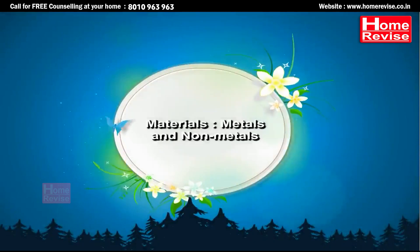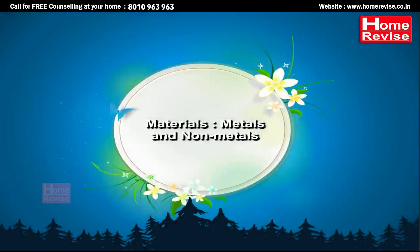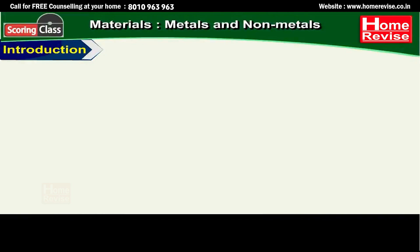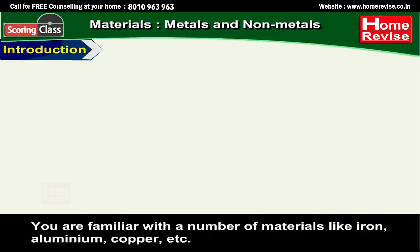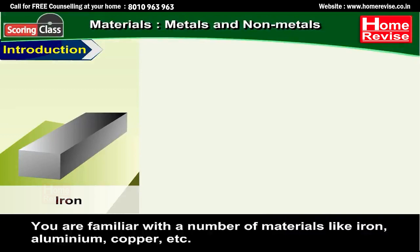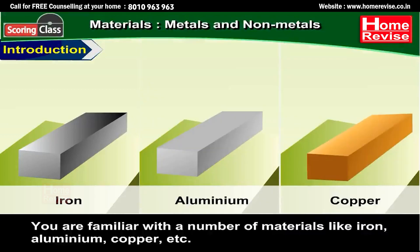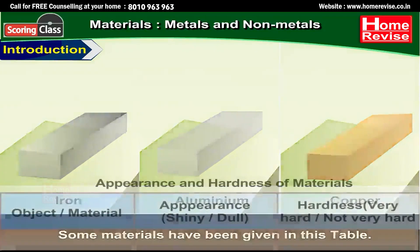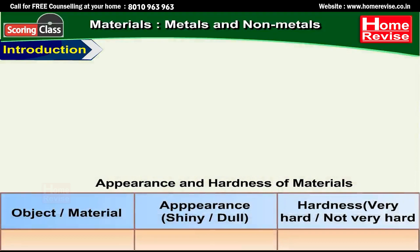Materials: metals and non-metals. You are familiar with a number of materials like iron, aluminum, copper, etc. Some materials have been given in this table — let's study the appearance and hardness of these materials.